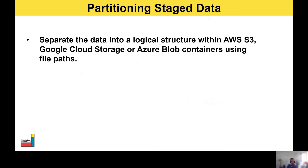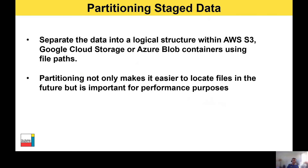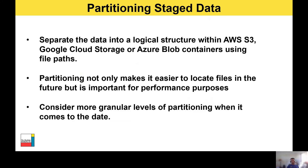Let's talk briefly about partitioning stage data within an external stage. You can separate data into a logical structure within AWS S3, Google Cloud Storage, or Azure Blob containers using file paths. Partitioning data this way not only makes it easier to locate files in future, but is also important for performance. A structure that includes the source system or application name along with the date the data was written should be considered a minimum requirement. You should also think about more granular partitioning by date — for example, using year, month, day, and potentially breaking it down further to hour or even 15-minute increments. The ultimate goal is to reduce the number of files in each directory, since the COPY statement will try to read the directory list presented by the cloud storage area.